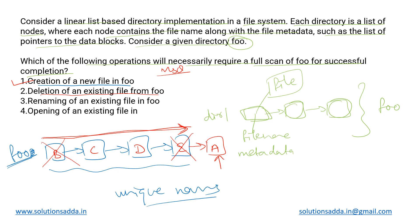This operation may or may not always require the traversal. The earlier we find that particular file we will delete it. This is our directory structure and in that we found this particular node corresponding to the file that is to be deleted. We will traverse only up to this point and not after that. This deletion operation may not always require the complete scan, and they have said will necessarily require. That is not always true for this, so it will be incorrect.